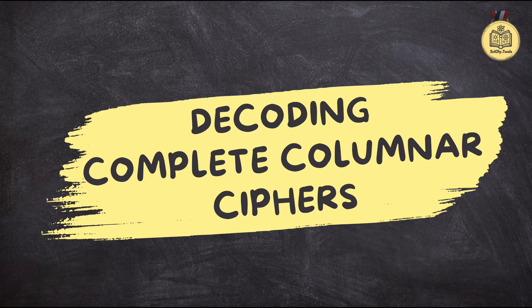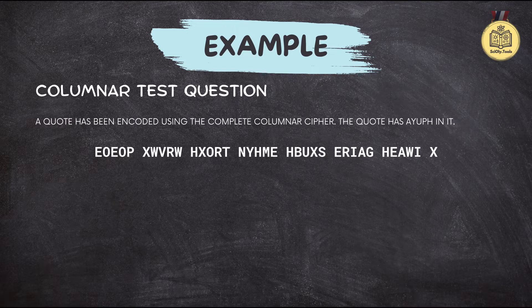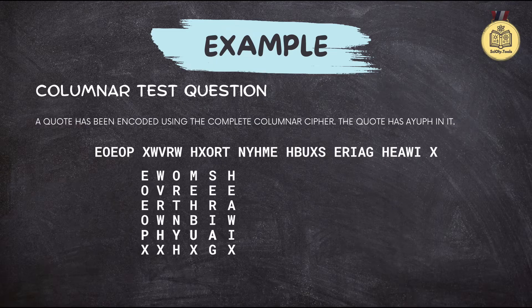Let's jump into columnar ciphers today. If you're prepping for Science Olympiad, you're going to see these in the CodeBusters event. Basically, think of it like a puzzle where you've got to rearrange jumbled-up letters to find the original message — it's more about the order of the letters being all mixed up. We're talking about taking the original message and putting it into columns, which is how the 'columnar' part comes in. Imagine taking a sentence and writing it out vertically, column by column, instead of just straight across. They add in some extra letters, usually X's, just to make all those columns the same length. So now you've got this grid of letters, and the real secret is figuring out the right order of those columns to make that original message reappear.